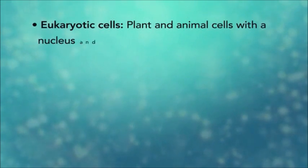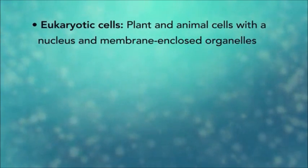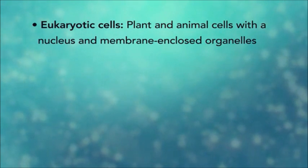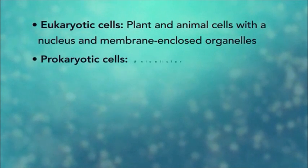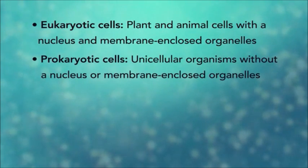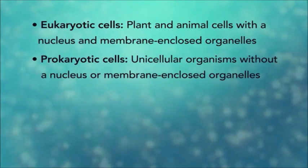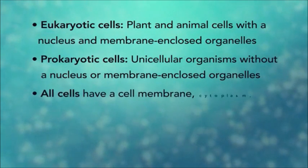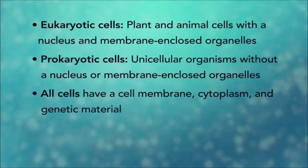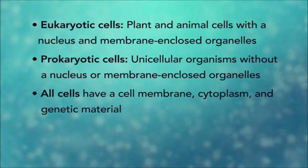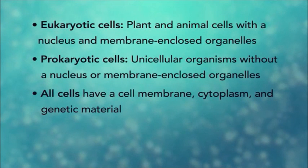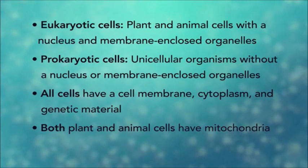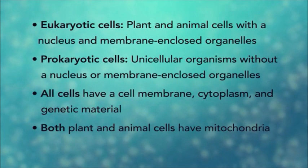In summary, eukaryotic cells are plant and animal cells with a nucleus and membrane-enclosed organelles, while prokaryotic cells are unicellular organisms without these things. All cells have a cell membrane, cytoplasm, and genetic material. And even though only plant cells have chloroplasts, both plant and animal cells have mitochondria.